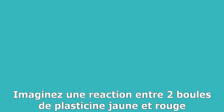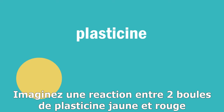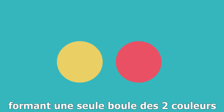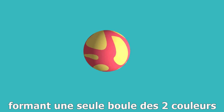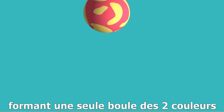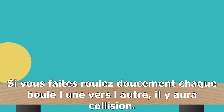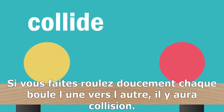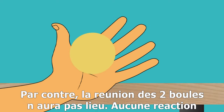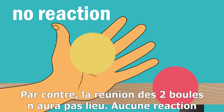Imagine our reaction being that of a ball of yellow plasticine reacting with a ball of red plasticine, to give just one ball consisting of the yellow and red plasticine stuck together. If you slowly roll the ball of yellow plasticine towards the ball of red plasticine, they will collide. However, if you pick up the ball of yellow plasticine, the ball of red plasticine will not be stuck to it. No reaction.